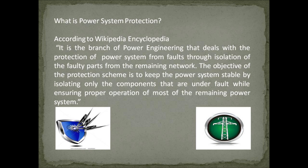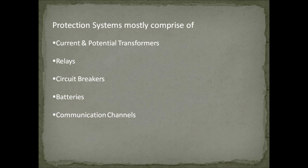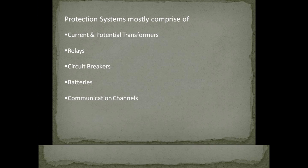Power system protection is the branch of power engineering that deals with the protection of the power system from faults through isolation of the faulty parts from the remaining network. The objective of the protection scheme is to keep the power system stable by isolating only the components under fault while ensuring proper operation of most of the remaining power system. Protection systems mostly comprise of current and potential transformers, relays, circuit breakers, batteries, and communication channels.